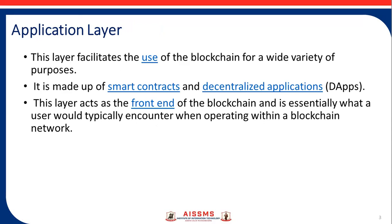Applications are incorporated into the application layer, assuming any available flavors of blockchain, while some applications are integrated into the application layer and interact with the blockchain layers. That is why the application layer should be considered as a blockchain part. This layer makes up the smart contracts and decentralized applications, and acts as the front end of the blockchain — essentially what a user would encounter when operating within a blockchain network.